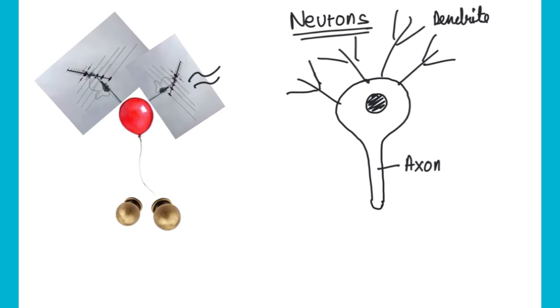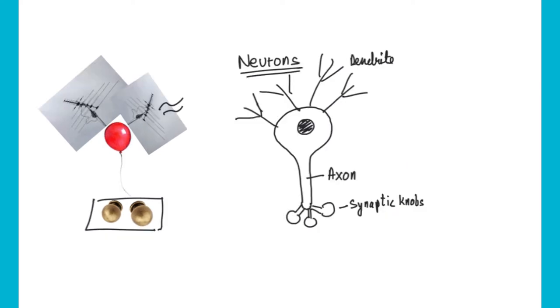Now, towards the end of the axon, as you can see in the picture, there are doorknobs. These are actually doorknobs, so they are something known as synaptic knobs at the end of the axon.